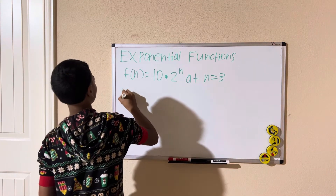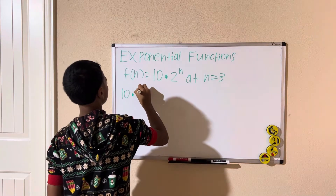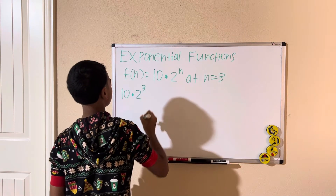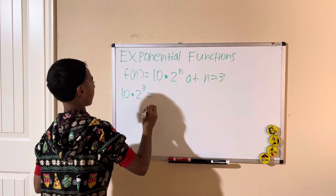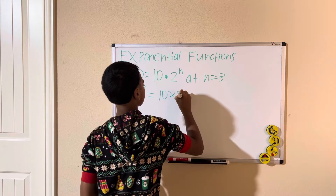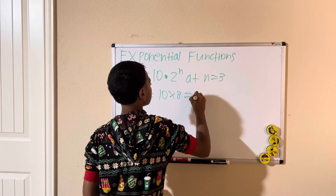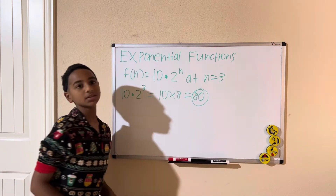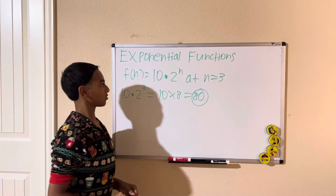We're going to have 10 times 2 to the power of 3, which simplifies to 10 times 8, which is 80. That is how you evaluate this function.